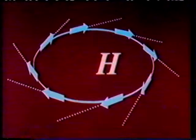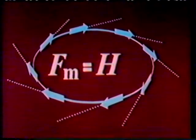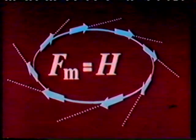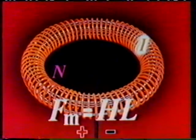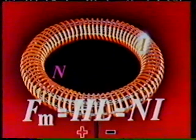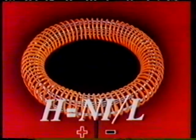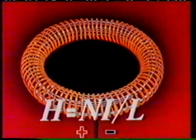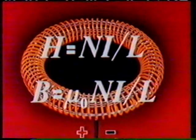We will calculate the magnetic field strength along the centre line of the toroid. The magnetomotive force along this line, Fm, is the product of the field strength H and the length of the path L. The magnetomotive force is also equal to the current enclosed by the path. If the coil has N turns and the current through the coil is I, the total current enclosed will be NI. By dividing both sides by L, the magnetic field strength H = NI/L is obtained. If the toroid is in a vacuum, the magnetic induction B can be found by multiplying H by mu0.